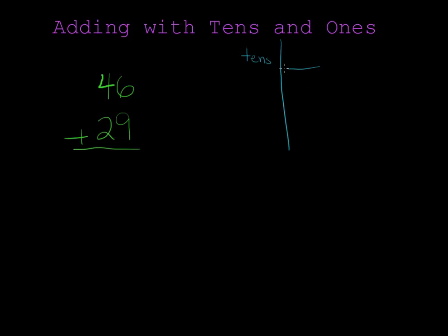First I'm going to draw that and put it into my tens and ones. So 46 has 4 tens and 6 ones. 29 has 2 tens and 9 ones.